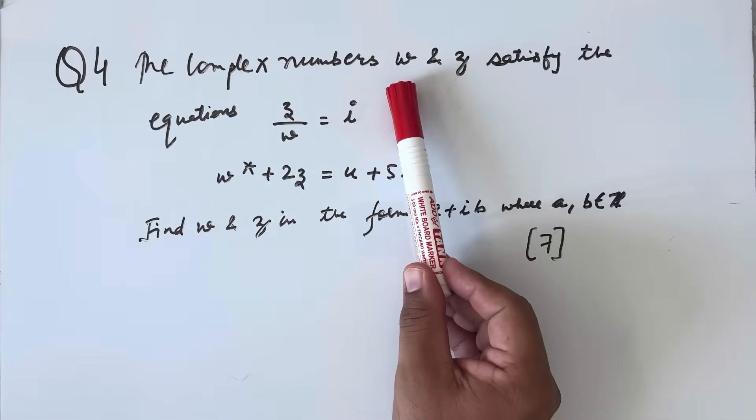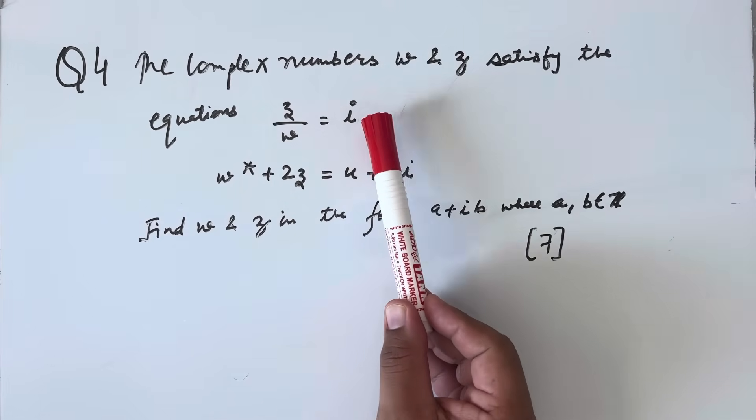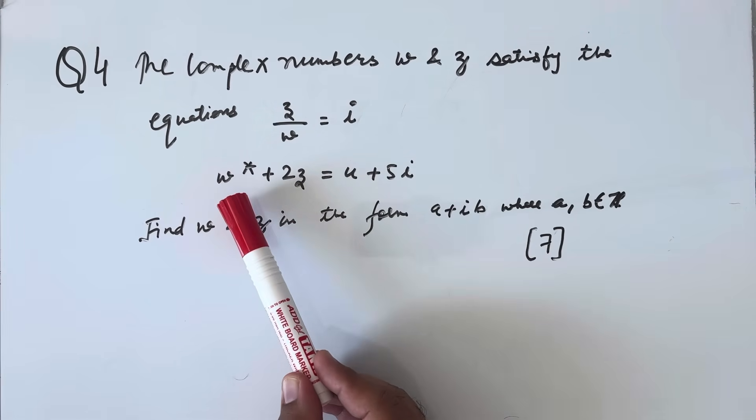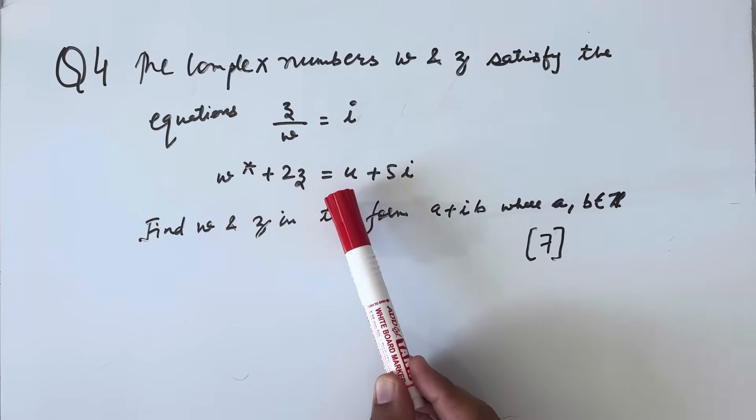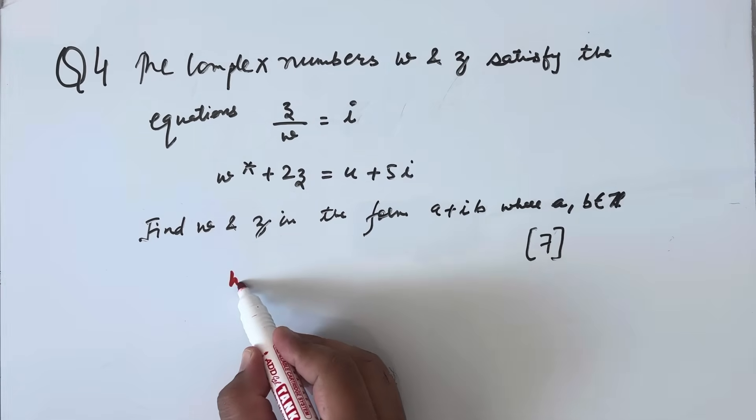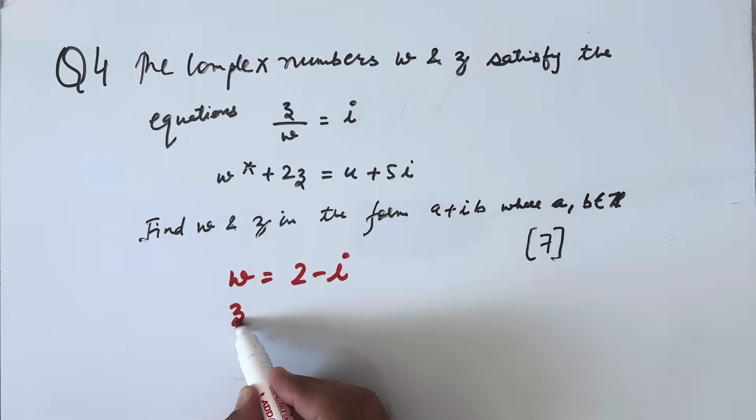Question number 4: The complex numbers w and z satisfy the equation z/w equals i and w* (that is conjugate of w) plus 2z equals 4 + 3i. Find w and z in the form a + ib where a, b belongs to integer. This is of 7 marks. Answer will be w equals 2 - i and z equals 1 + 2i.